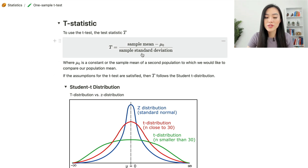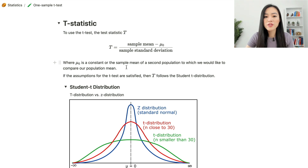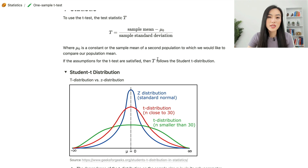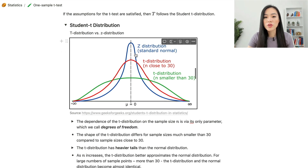To use the t-test, the statistic t equals the sample mean minus mu-zero, over the sample standard deviation. This form is the same as the z-test statistic, where mu-zero is a constant or the sample mean of a second population we'd like to compare against. If the assumptions for the t-test are satisfied, the test statistic follows the Student's t-distribution.